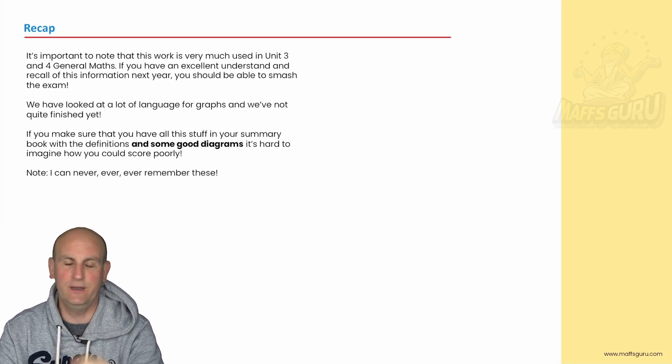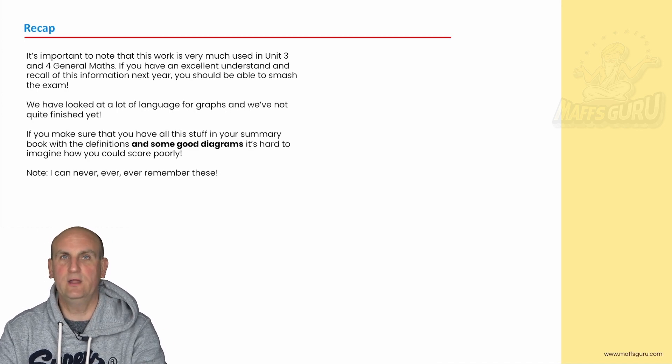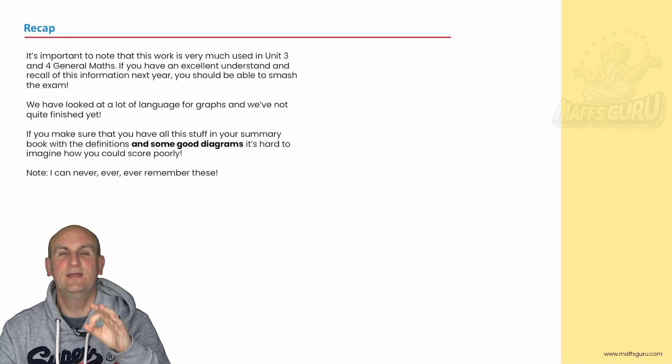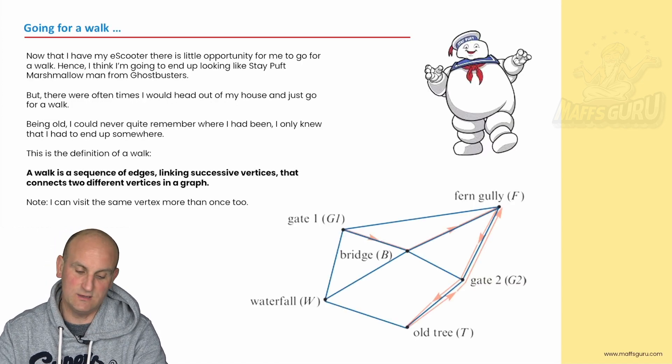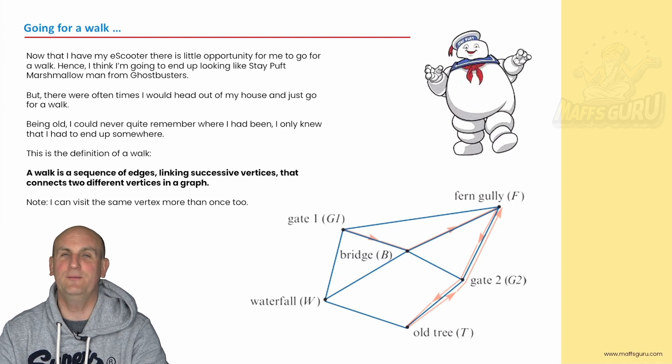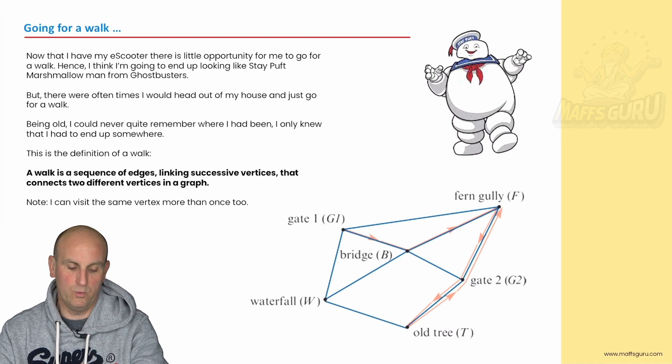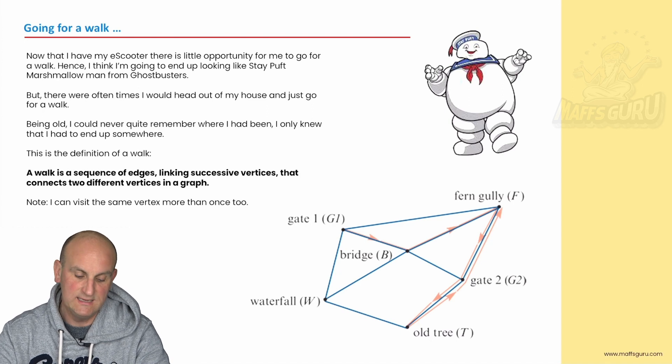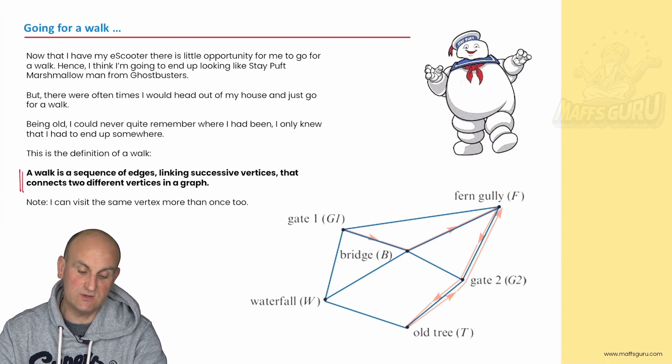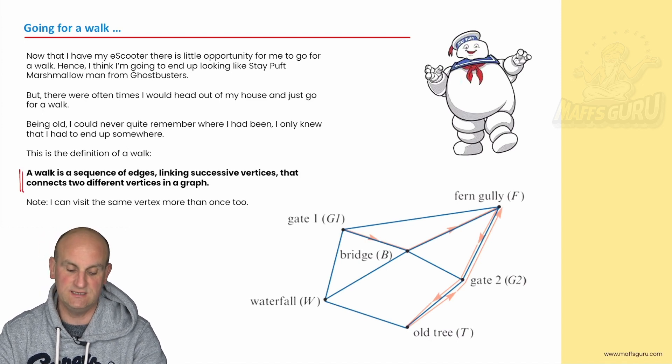I know good skin care. British, great skin. Living in Australia, don't go out in the sun. But the point is I can't remember these. Why should you be expected to? Put it in your summary book. Have it there. So useful. Now a lot of this makes sense when we talk about a walk. The important bit for you guys is to notice this section here: A walk is a sequence of edges linking successive vertices that connects two different vertices in a graph.